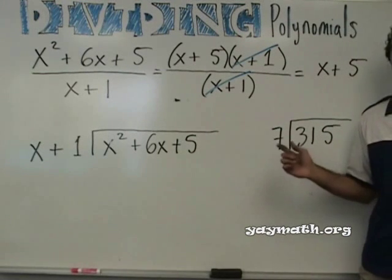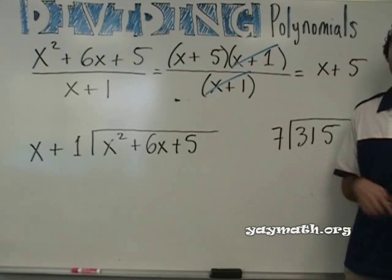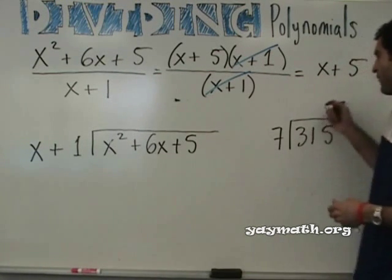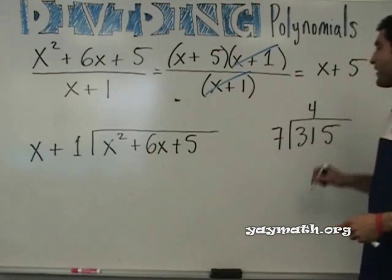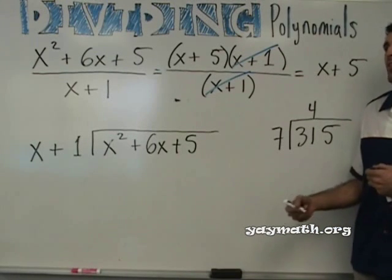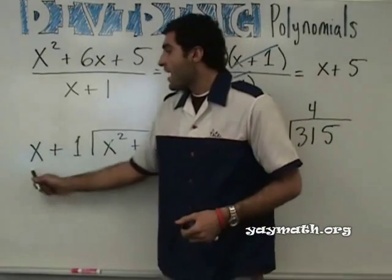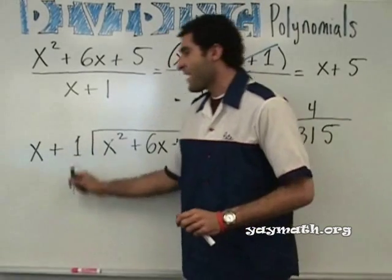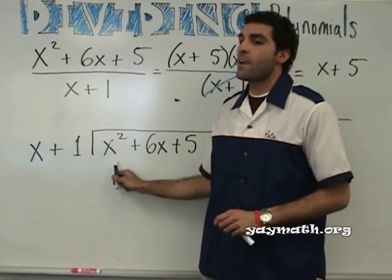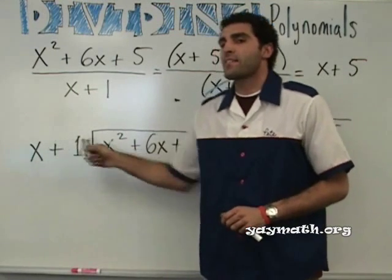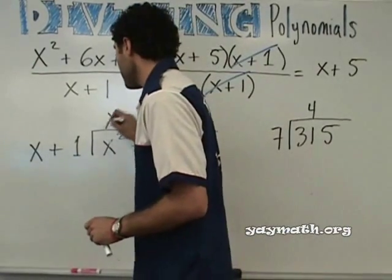So you know how to do long division already. What do we do first? How many times is seven going into 31? As close as possible to 31 without going over. So now over here — how many times does X go into X squared? What would I put here to multiply by X to make X squared? X. Correct.